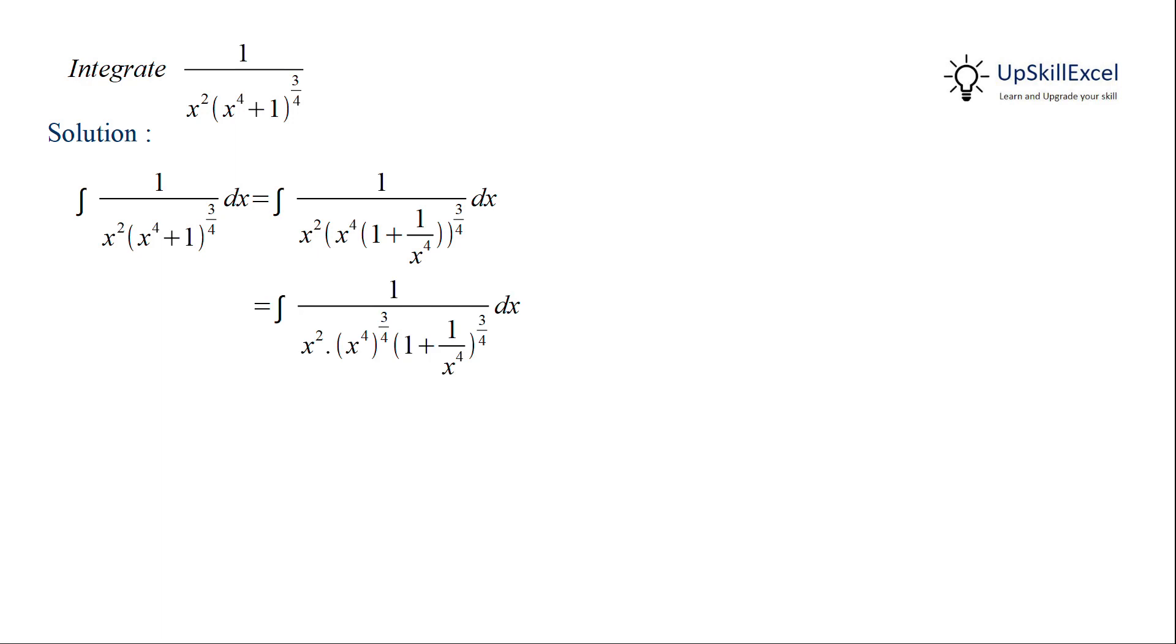As x⁴ is raised to the power 3/4, the fours cancel giving us x³. Now in the denominator we have x² multiplied by x³, giving us x⁵.